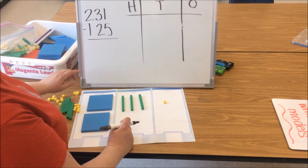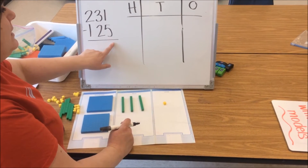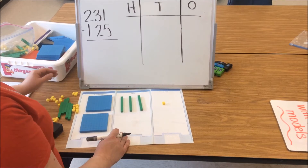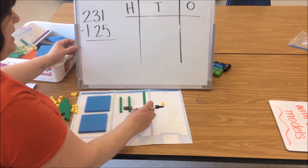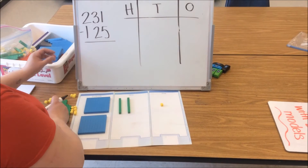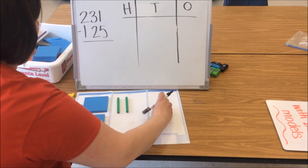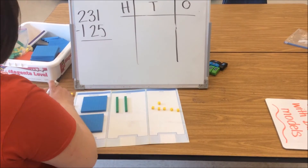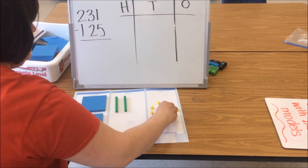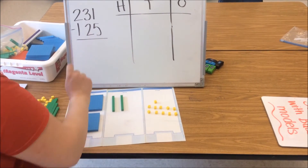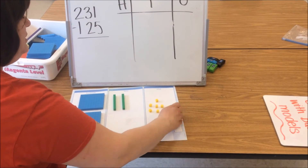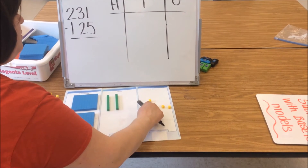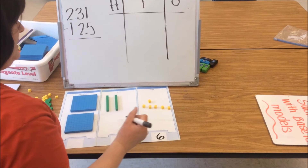Now we're ready to start subtracting. We're always going to start in our ones column. We need to take away 5 ones. Unfortunately, we don't have 5 ones, so we're going to decompose — take a 10 and break it into 10 ones. Students use the word decomposing in class, so you might hear them use that at home. We count out 10 ones, then take away our 5 ones: 1, 2, 3, 4, 5. We count what's remaining: 1, 2, 3, 4, 5, 6 — that's 6 ones.